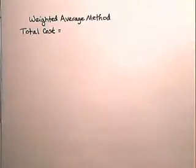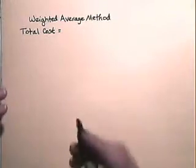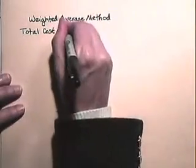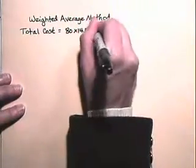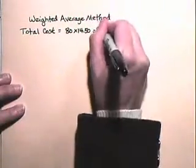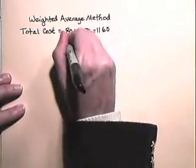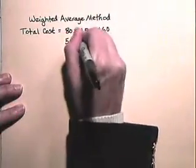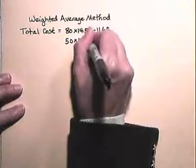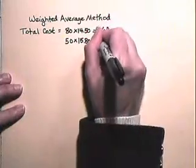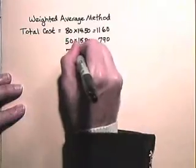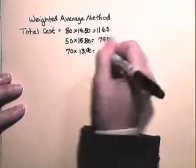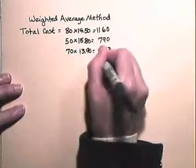Let's use the weighted average method. The first thing we need to do is find the total costs of all inventory. We have 80 units at $14.50, which is $1,160. We have 50 units at $15.80, which is $790. And we have 70 units at $13.90, which is $973.